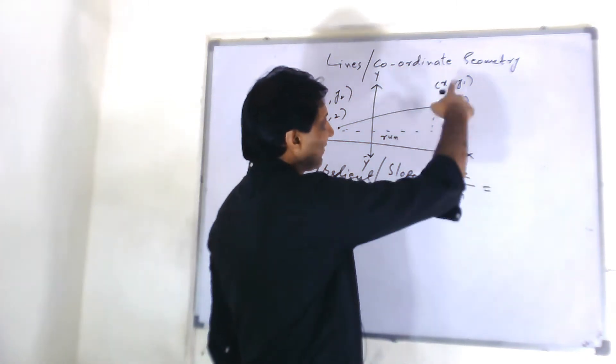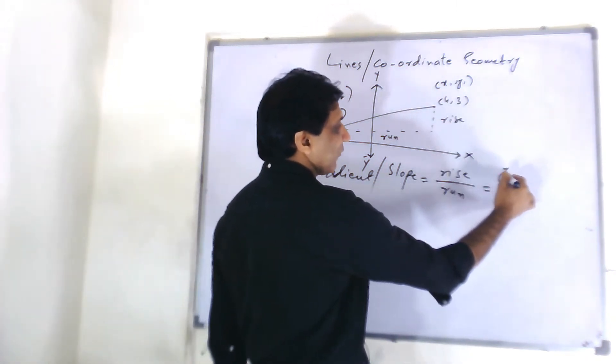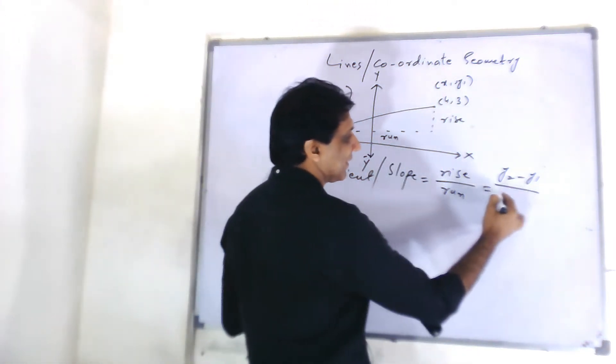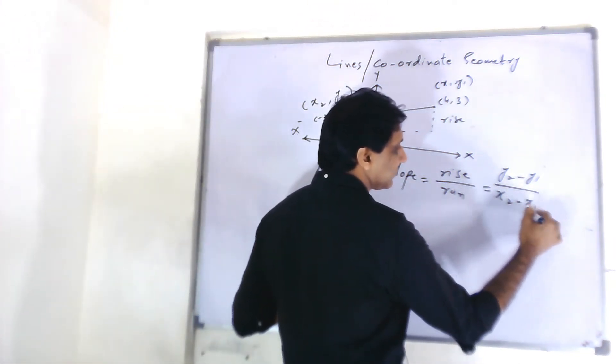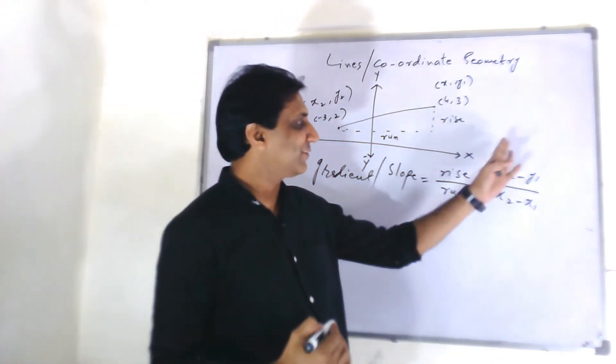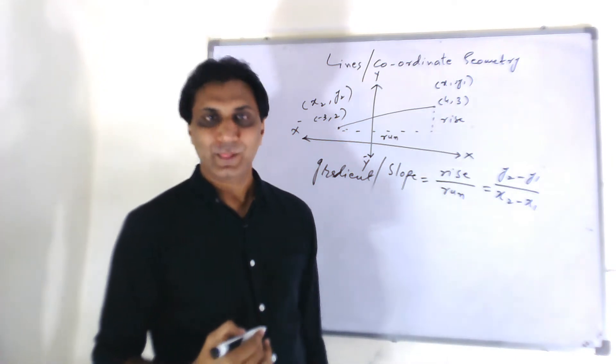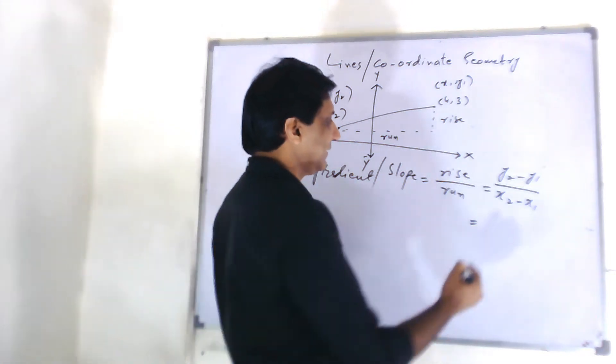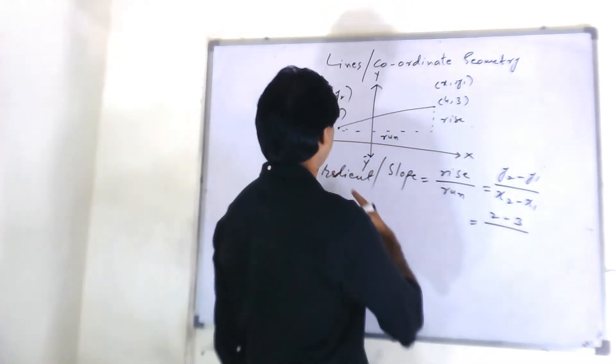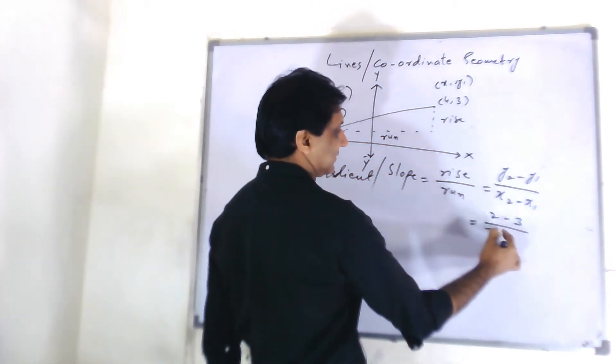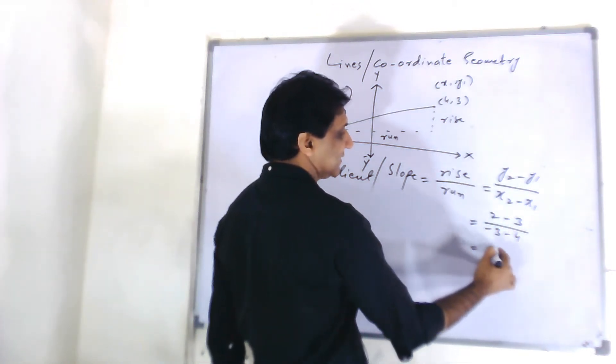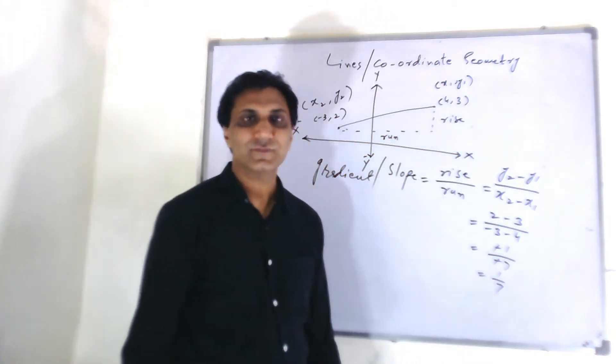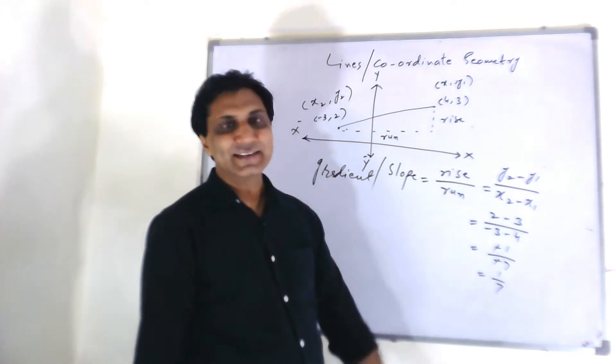To find out the rise, we will take y2 minus y1 and to get run, we will get x2 minus x1. So, the slope is y2 minus y1 upon x2 minus x1. Let us find out the slope. 2 minus 3 divided by minus 3 minus 4. That is minus 1 over minus 7 or 1 over 7. So, the gradient is positive.